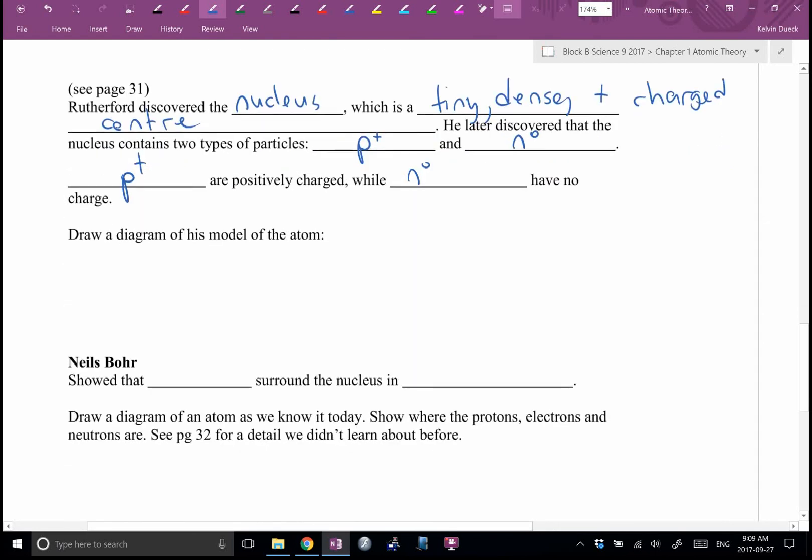Then I have, draw a diagram of his model of the atom. So, Rutherford believed the atom looked like this. There was the nucleus, and there were protons and neutrons inside the nucleus. And then he just figured that the electrons were kind of scattered. Kind of willy-nilly all over the place. He didn't yet realize that the electrons also have a structure. So far, so good. Hopefully, 99% of this is review or just clarifying what we've done already.